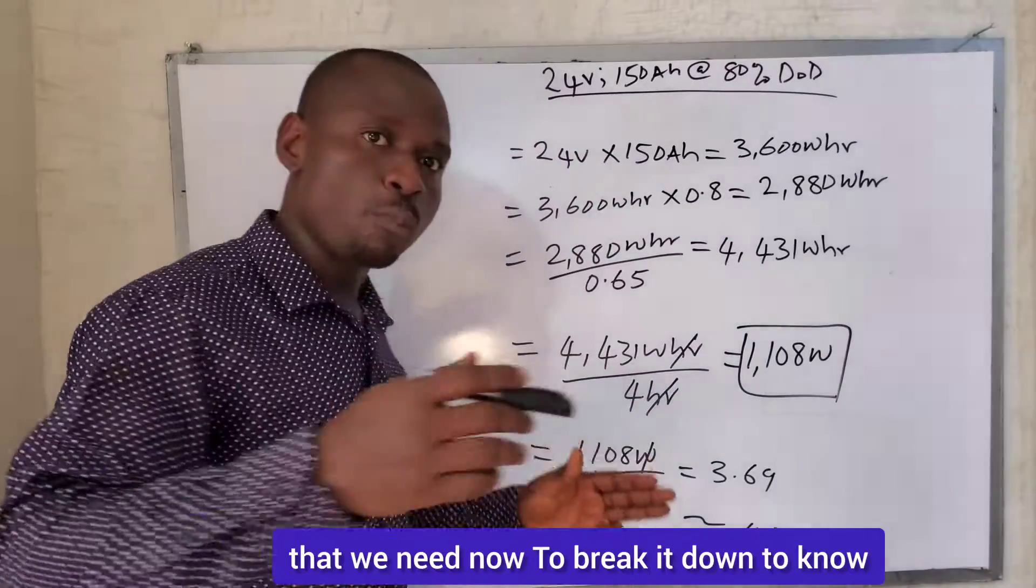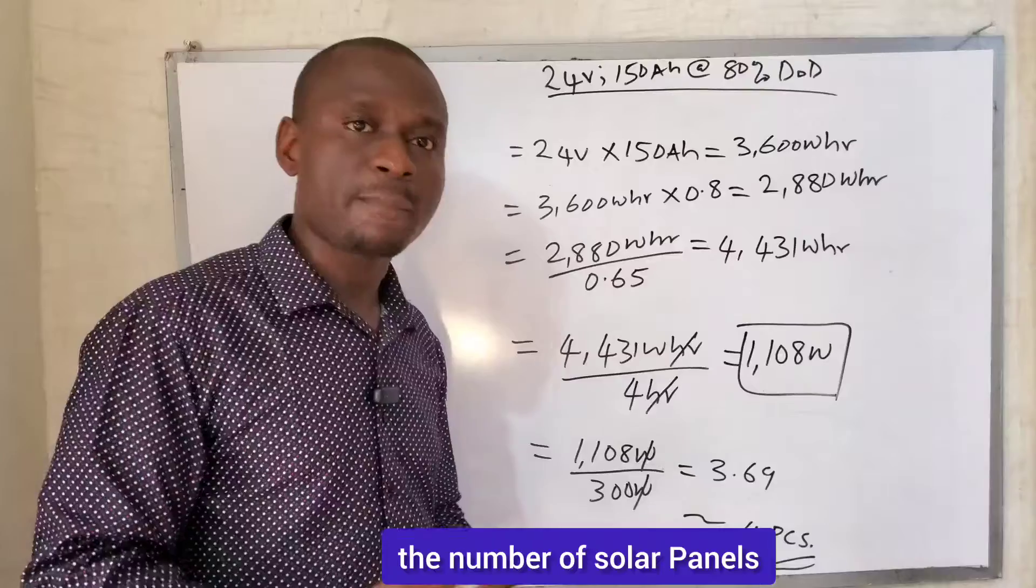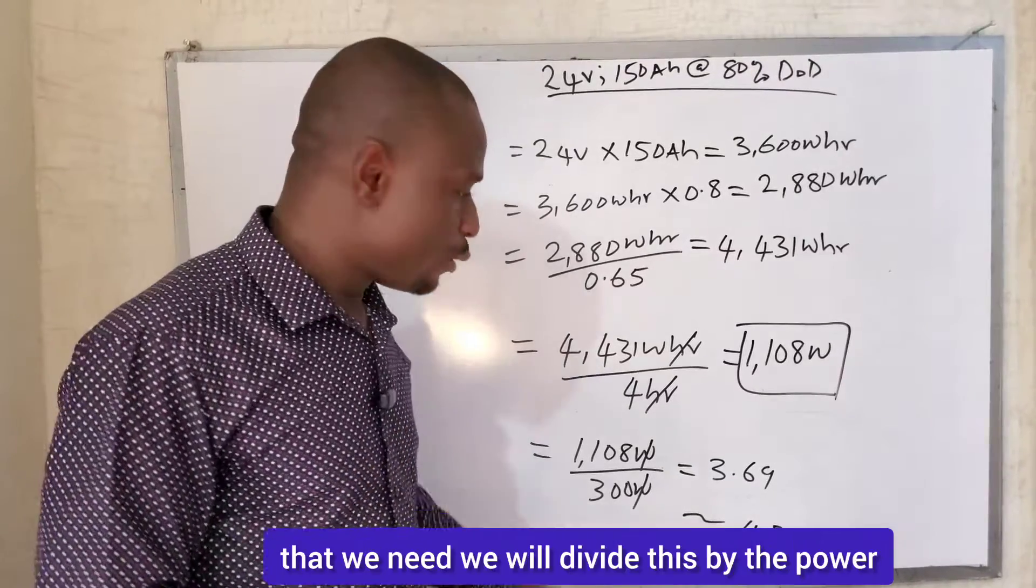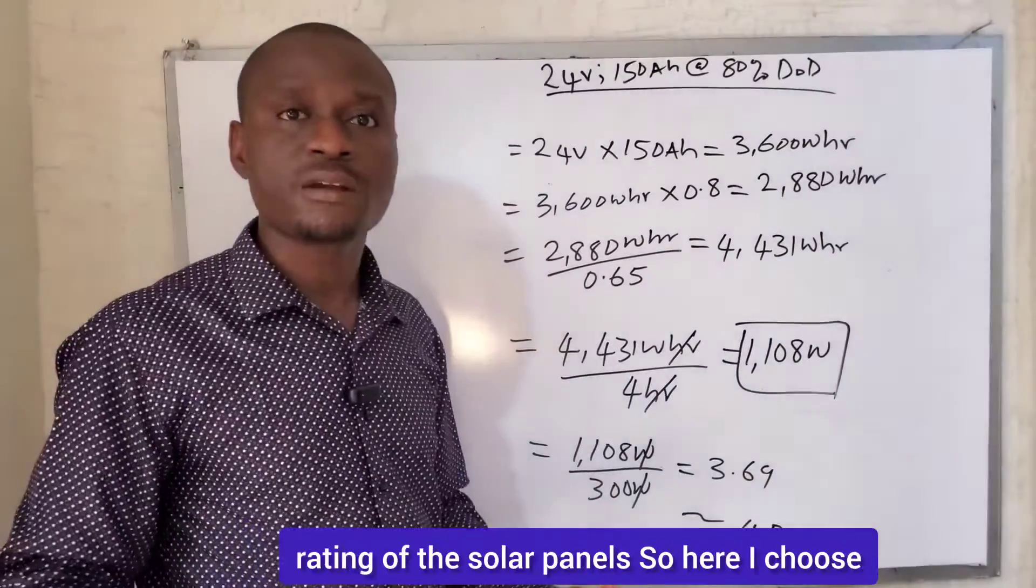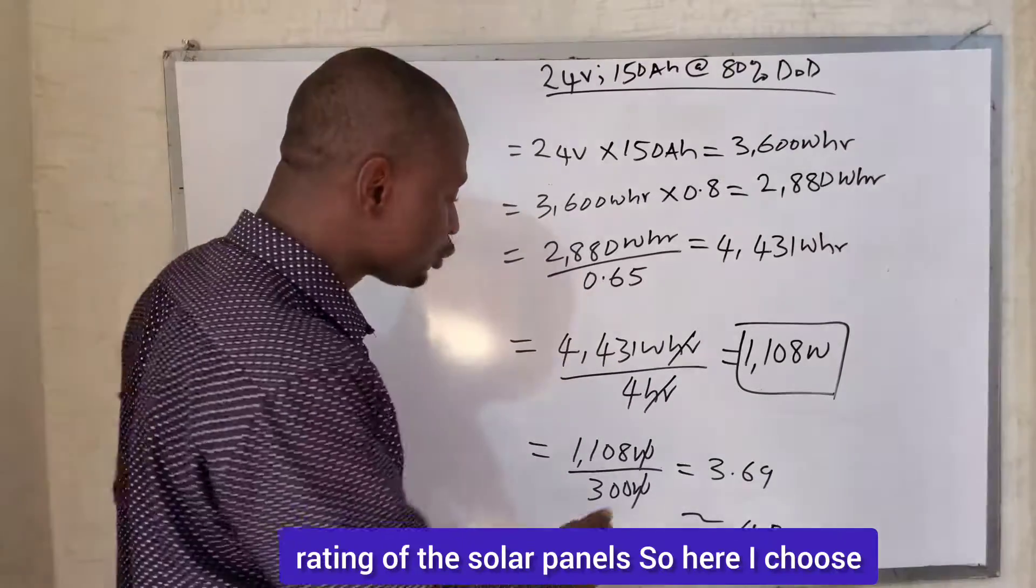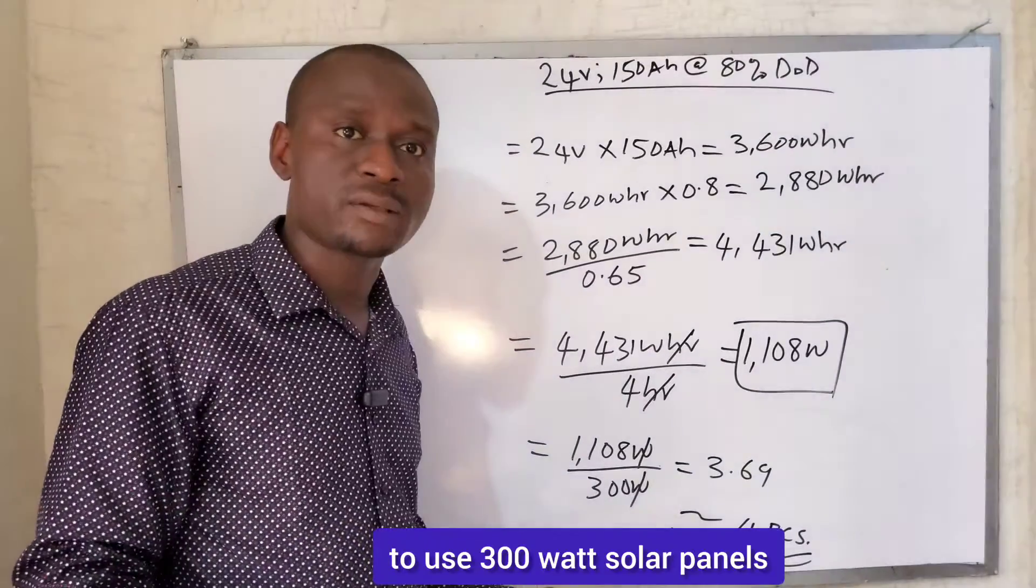Now to break it down to know the number of solar panels that we need, we will divide this by the power rating of the solar panels. So here I choose to use 300-watt solar panels.